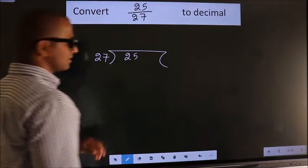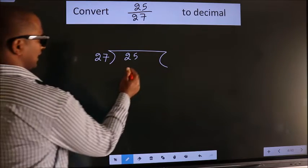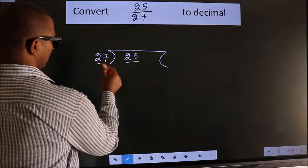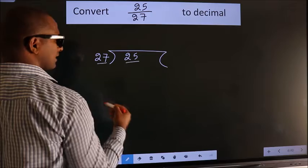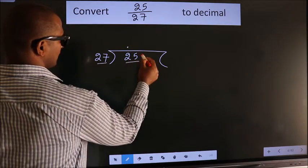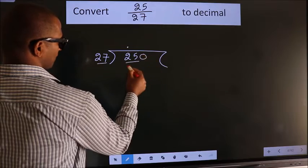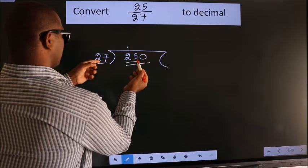This is your step one. Here we have 25 and 27. 25 is smaller than 27, so what we should do is put a dot here, take 0 here. So 250—a number close to 250 in the 27 table.